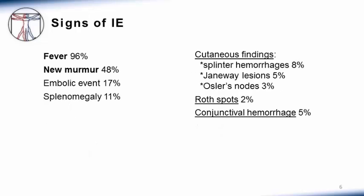The signs of infective endocarditis — that is, the findings that a clinician would see on physical exam — reflect the four processes discussed earlier. Fever, along with a new or changing heart murmur, and signs of embolic phenomena are the hallmark signs of infective endocarditis. Splenomegaly occurs in about one in ten patients. Cutaneous findings include splinter hemorrhages, Janeway lesions, and Osler nodes. Roth spots can be found on the retina, and conjunctival hemorrhages can be found on the conjunctiva. These peripheral manifestations are less commonly seen.